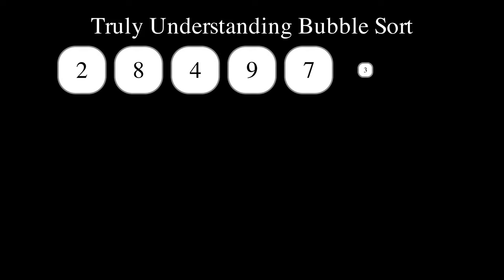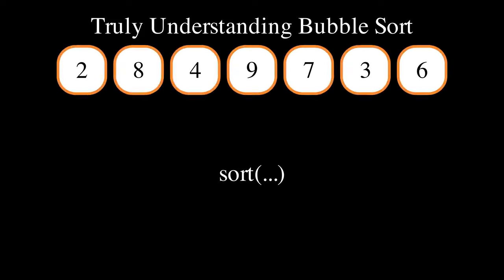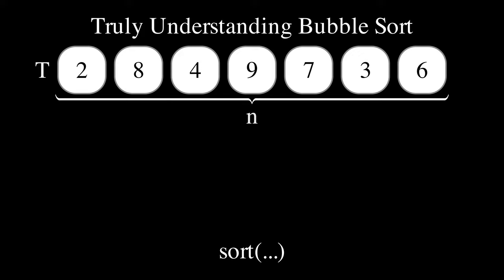Let us now implement bubble sort in the C language. We start with a function called sort that takes as input an array called t and its size called n as inputs.